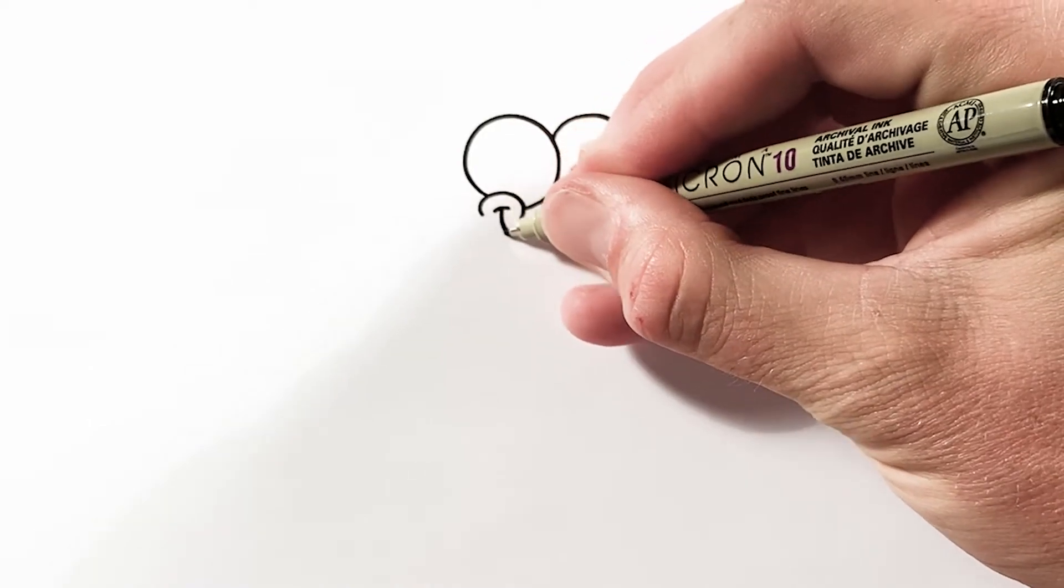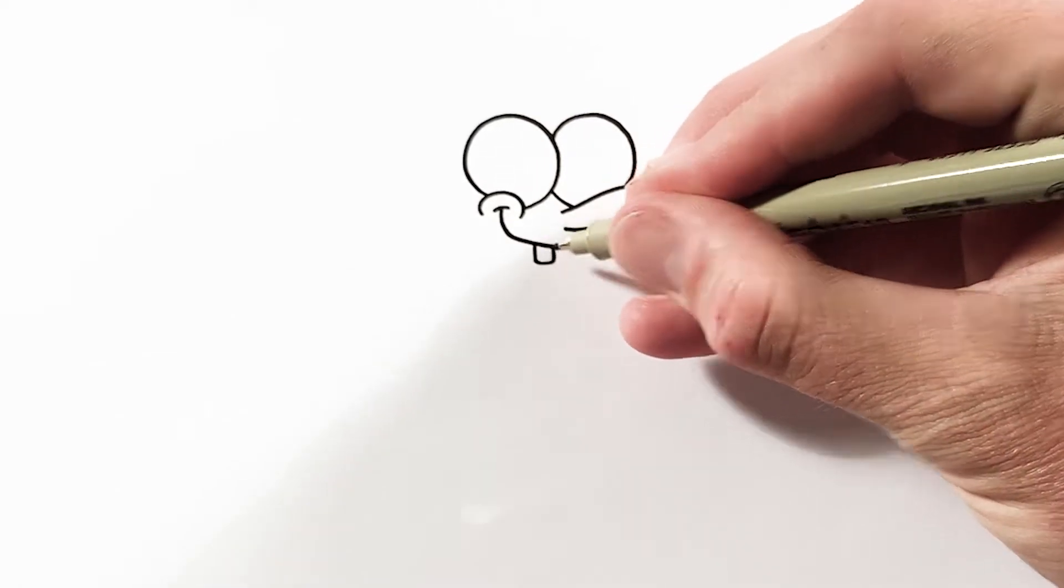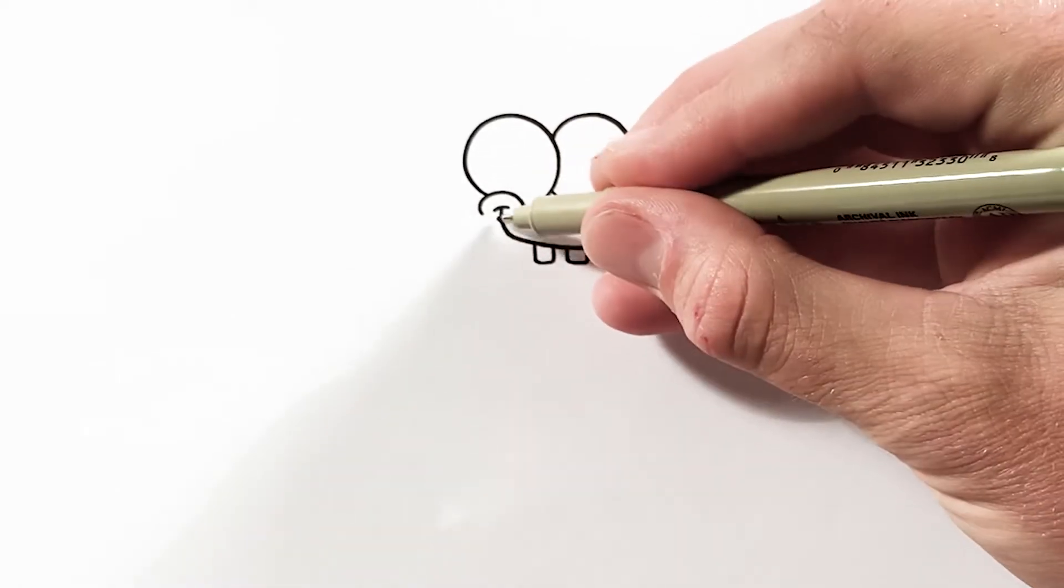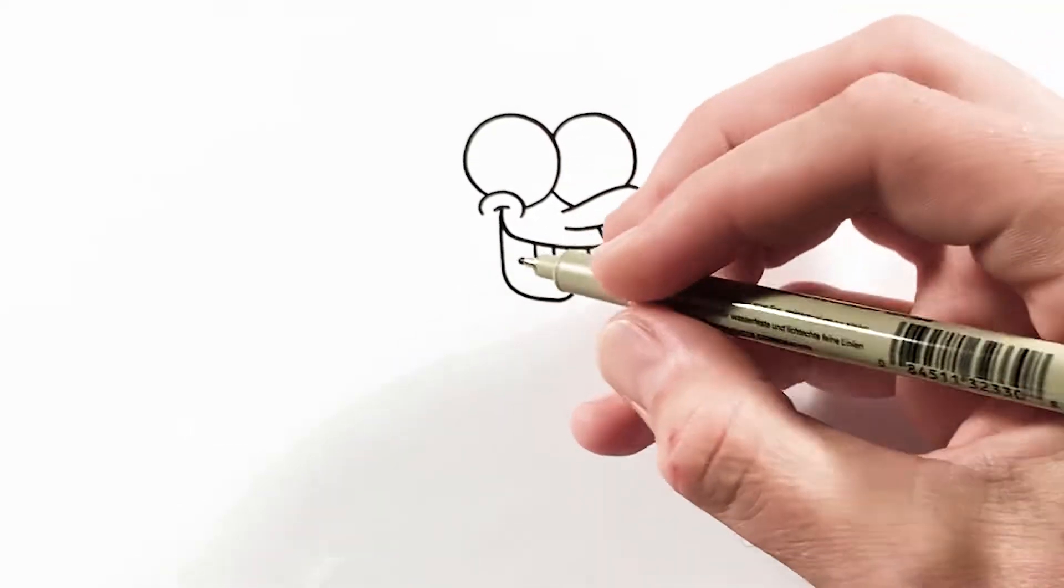I can use that same basic logic to get down to SpongeBob's mouth, but before I can draw the bottom of his mouth, I need to draw his teeth so that the line of the bottom of his mouth has somewhere to go.